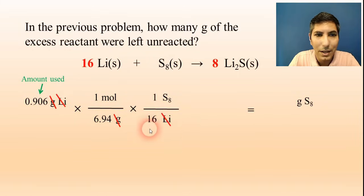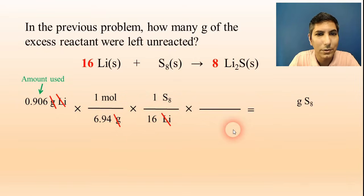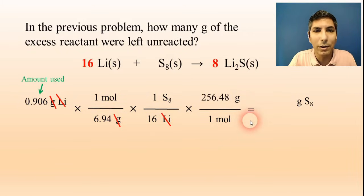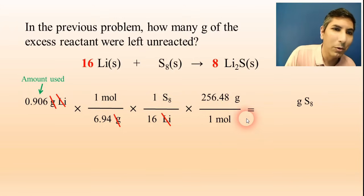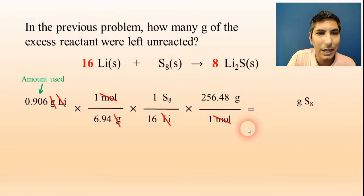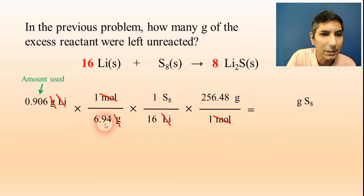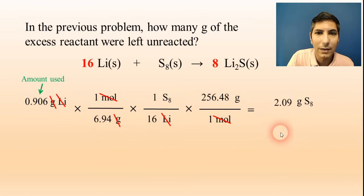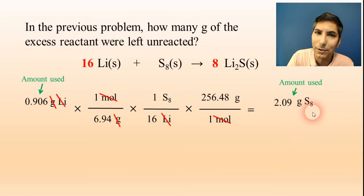Lithium cancels and we're in moles of sulfur. To convert to grams of sulfur, one mole on the bottom and grams on top. One mole of S8 is about 256.48 grams. Moles cancel, and the math gives: 0.906 ÷ 6.94 ÷ 16 × 256.48 = 2.09 grams of sulfur actually used.